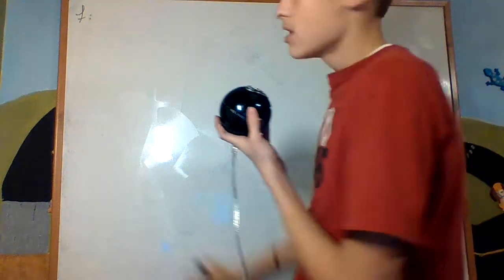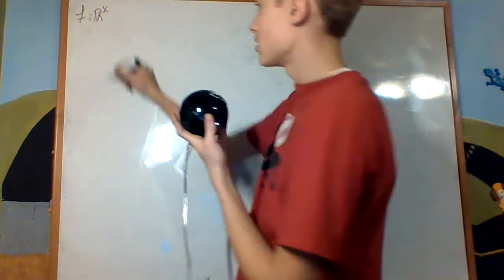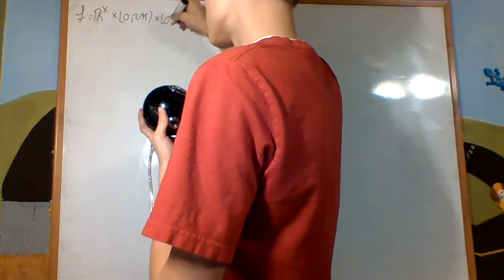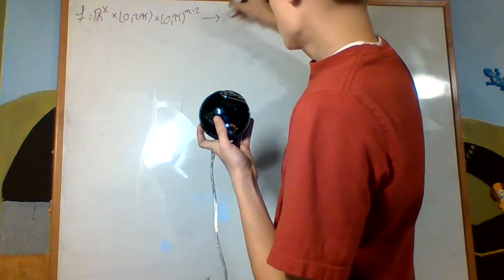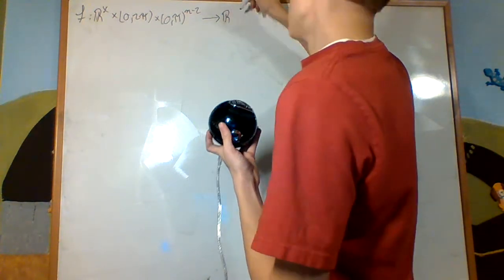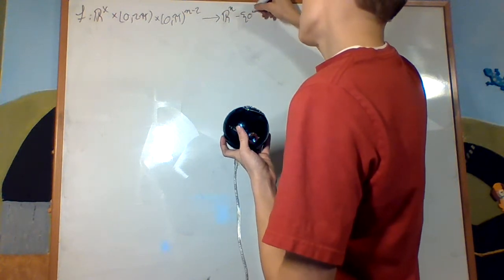Say we have a function f — this is going to be the hyperspherical coordinates parametrization. It takes you from R-plus, the positive real numbers (this is going to be your radius), cross the interval from 0 to 2π (this is going to be our theta), cross 0 to π to the n minus 2, and we'll take that into R^n removing the center.